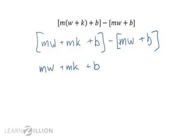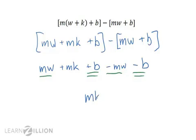And when we remove the second parentheses, we need to distribute the negative sign: negative mw minus b. Note that these terms add up to 0 and these terms add up to 0. So the difference simplifies to simply mk.